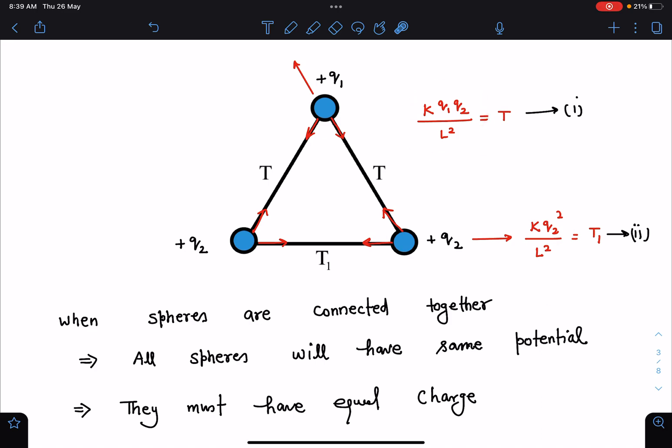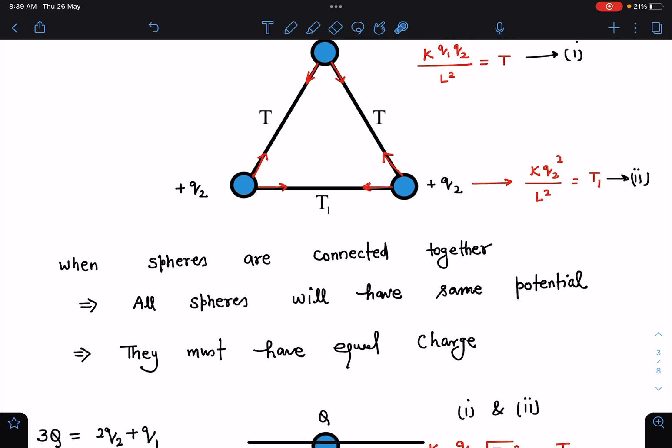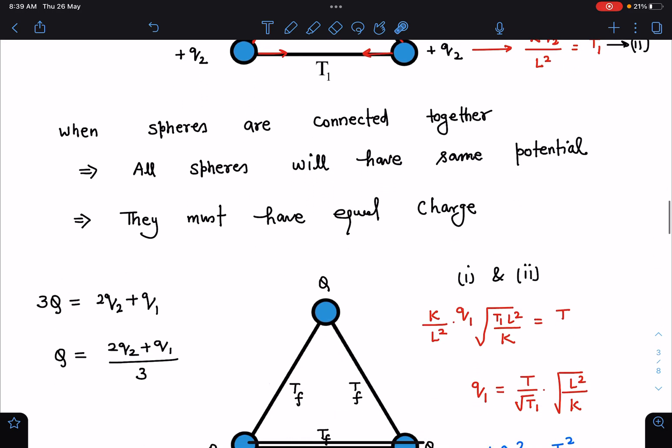These are the two equations and now when we are connecting these spheres with a conducting wire, charges will redistribute in such a way that finally all the three balls are having same potential. Once these balls are having same potential we can say they must be having equal charge and we can apply charge conservation.